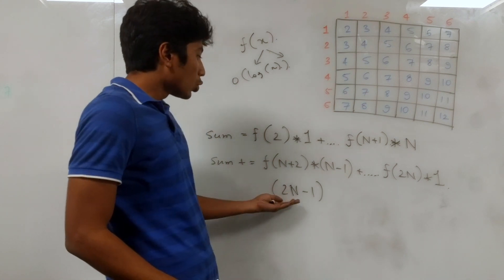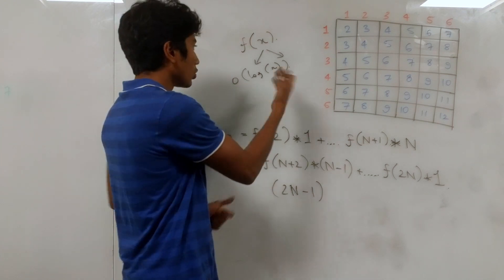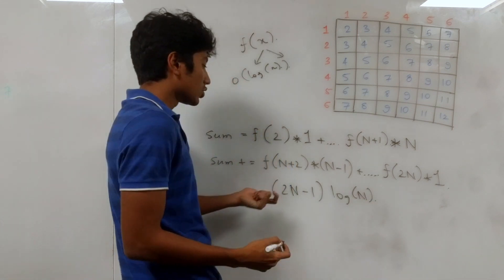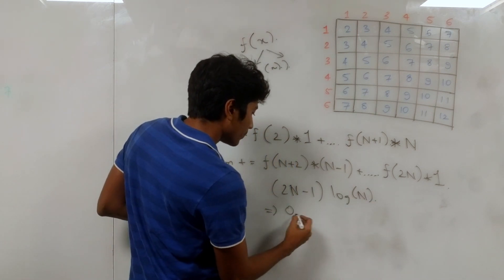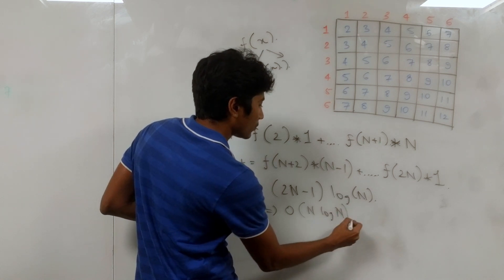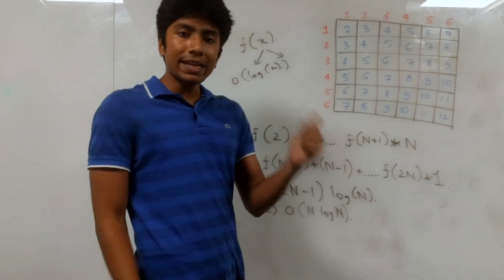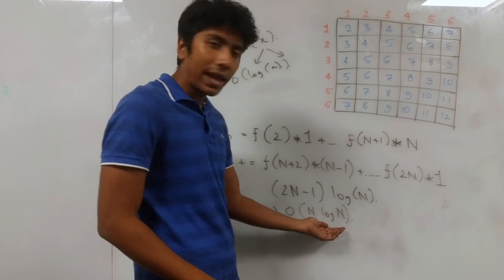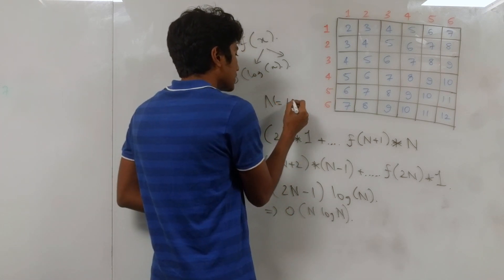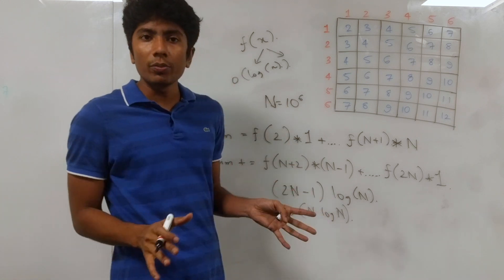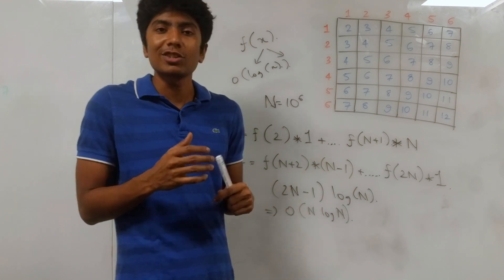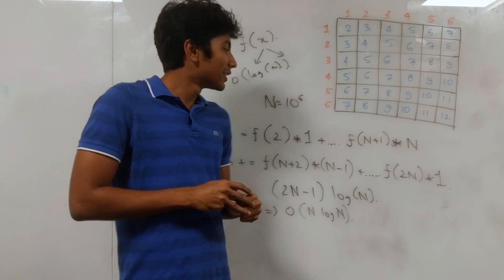So you have 2n−1 terms in total, each computable in O(log n), giving a total time complexity of O(n log n) per test case. The problem is that n itself can be 10^6, so that's around 10^8 computations per test case, and with 10^5 test cases there's no way this fits within the time limit. We need a better solution.